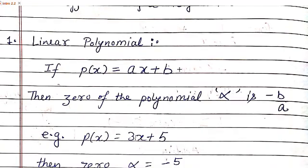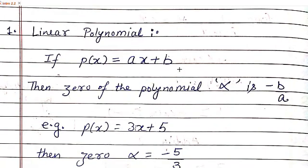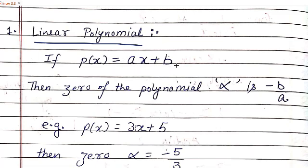We'll start with linear polynomials first. Linear polynomials are those polynomials which we can write as ax plus b, where a is a real number, b is a real number, a can't be zero but other than that it can have any value, and b can be any real number.